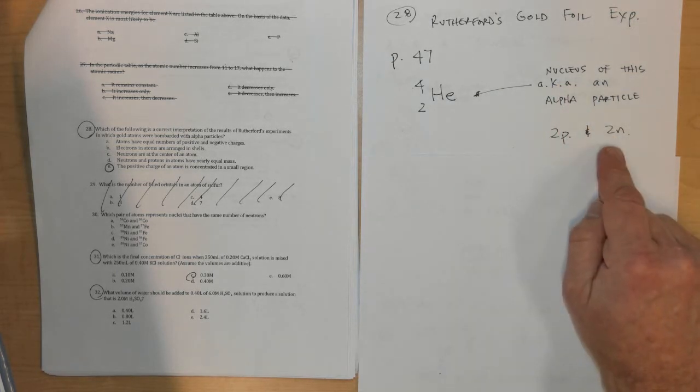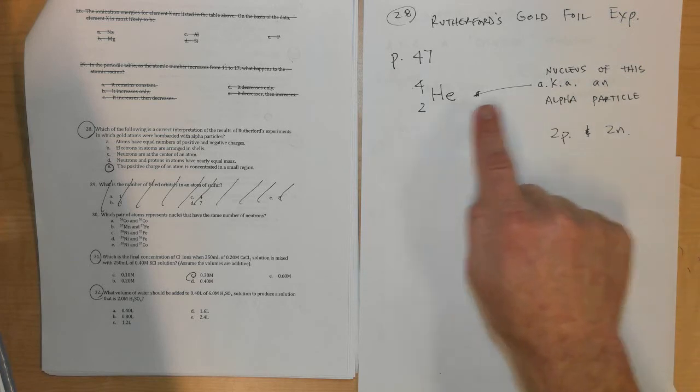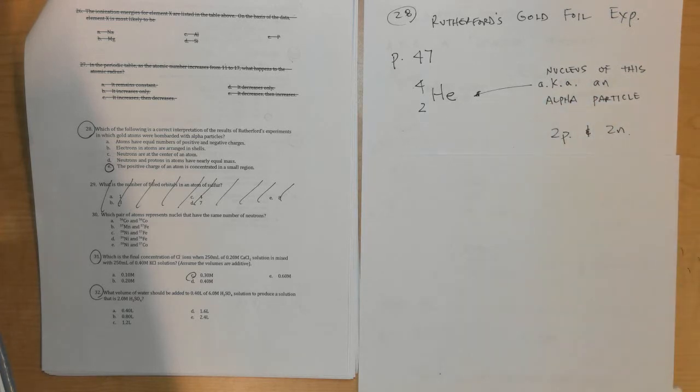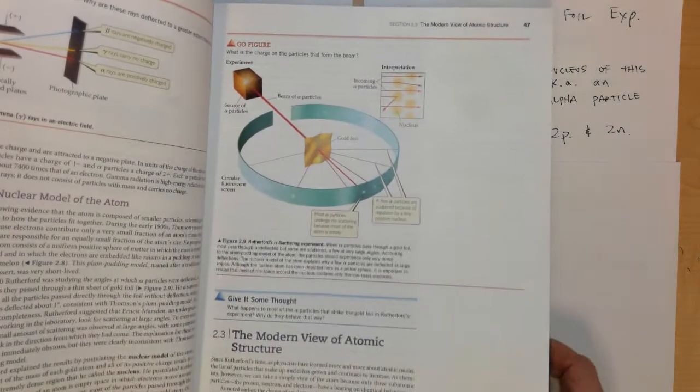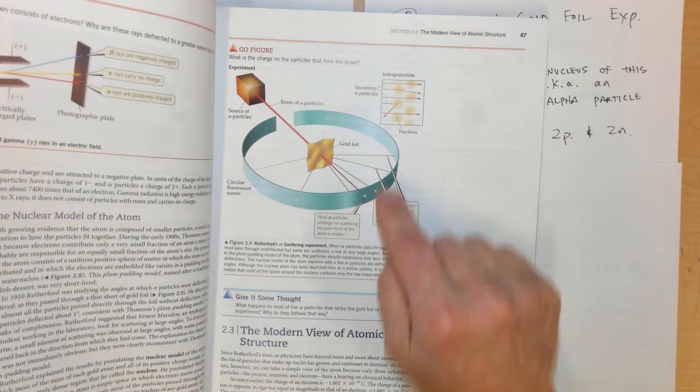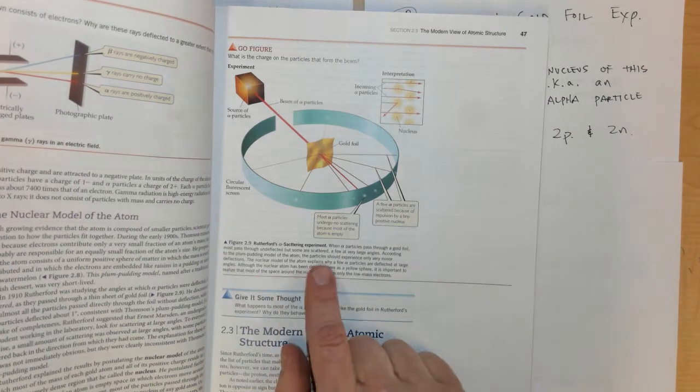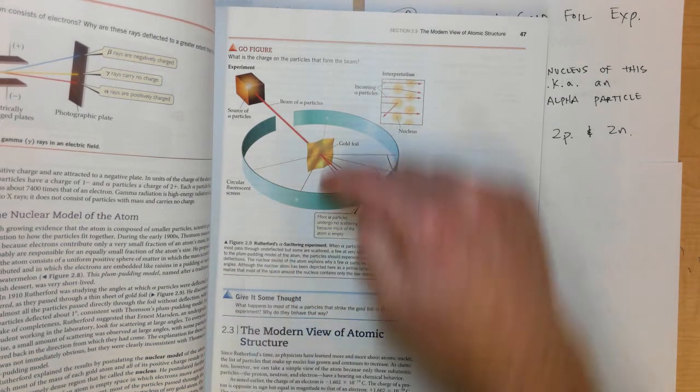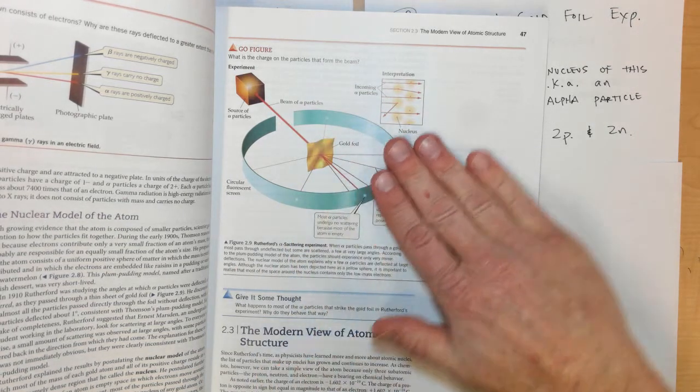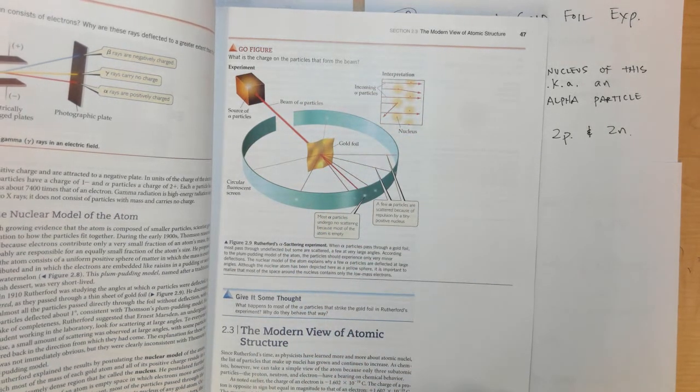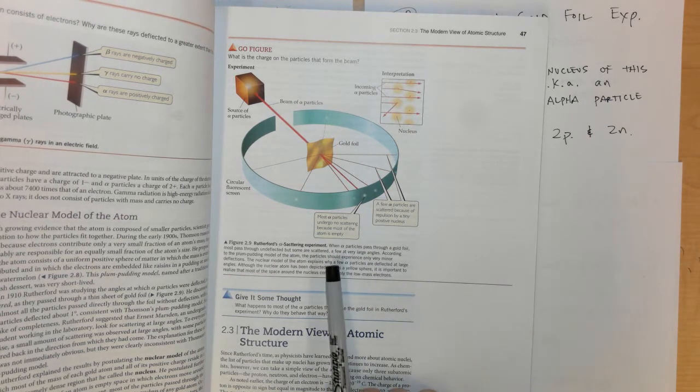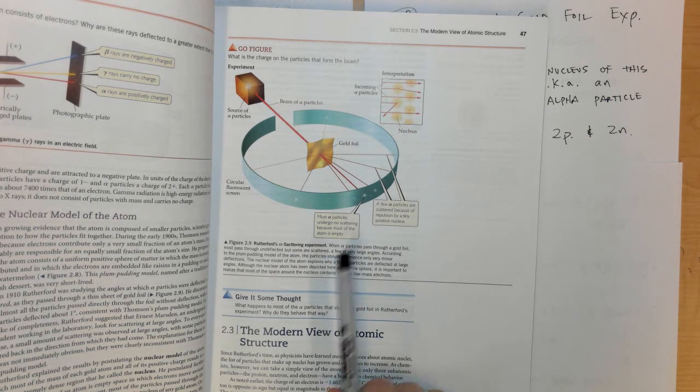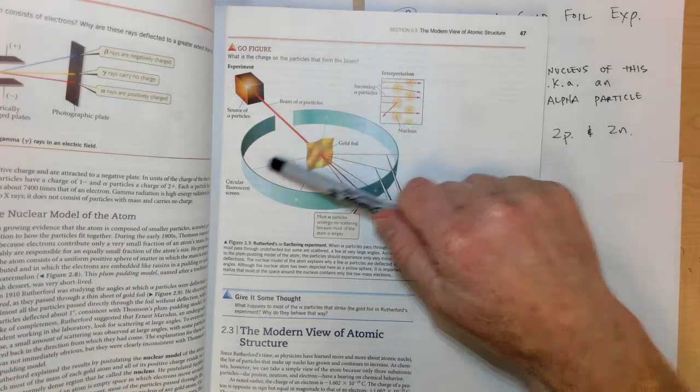Two protons would be the element helium, and so sometimes they call this a helium nucleus because it's got two protons and two neutrons. The nucleus of a helium atom is also known as an alpha particle. Well they took these alpha particles and they beamed them at the gold foil. When alpha particles pass through gold foil, most of them pass through undeflected and are detected straight behind it, but a few of them were scattered at very large angles.